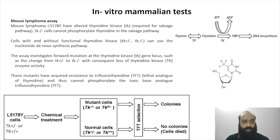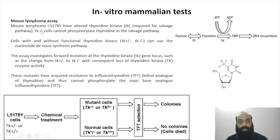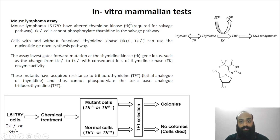If the TK gene is denoted as TK minus minus, it means the cells have a non-functional thymidine kinase gene and will not be able to phosphorylate thymidine in the salvage pathway.